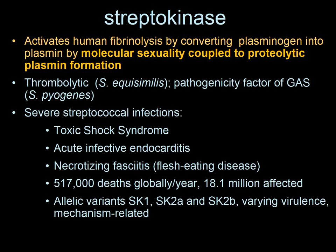This should be recognized by people who issue research grants, but apparently that's not the case. SK secreted by group A streptococci is classified into three clusters: SK1, SK2A, and SK2B. These are allelic variants — they vary in sequence, they vary in virulence, and it's mechanism-based.